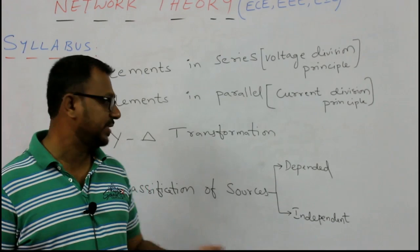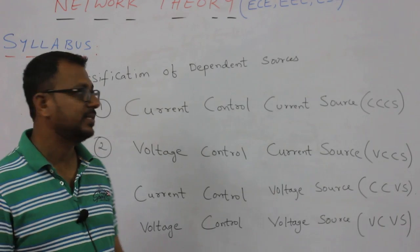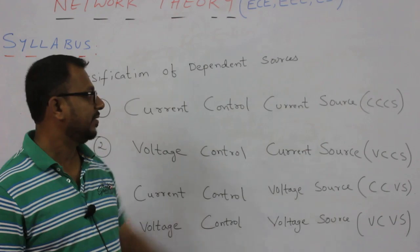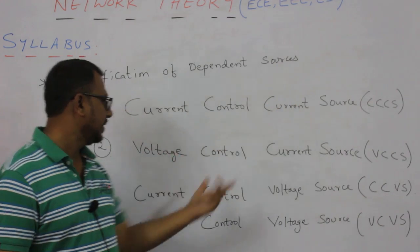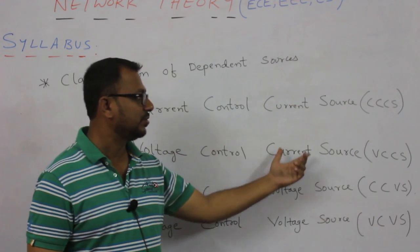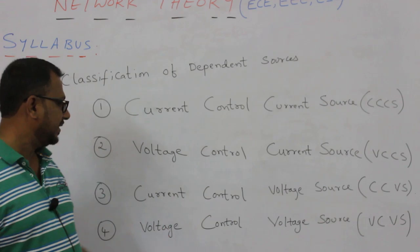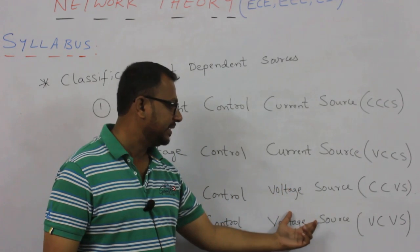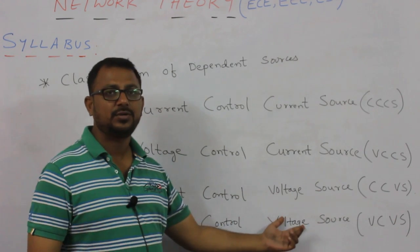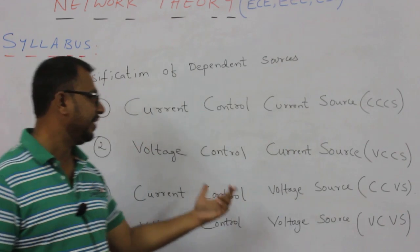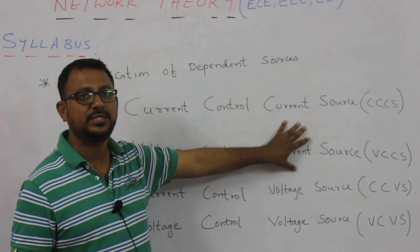We can classify sources as dependent sources and independent sources. For dependent sources, we can classify them into four types: current-controlled current source, voltage-controlled current source, current-controlled voltage source, and voltage-controlled voltage source. We are going to see the properties of each of these dependent sources in greater detail.